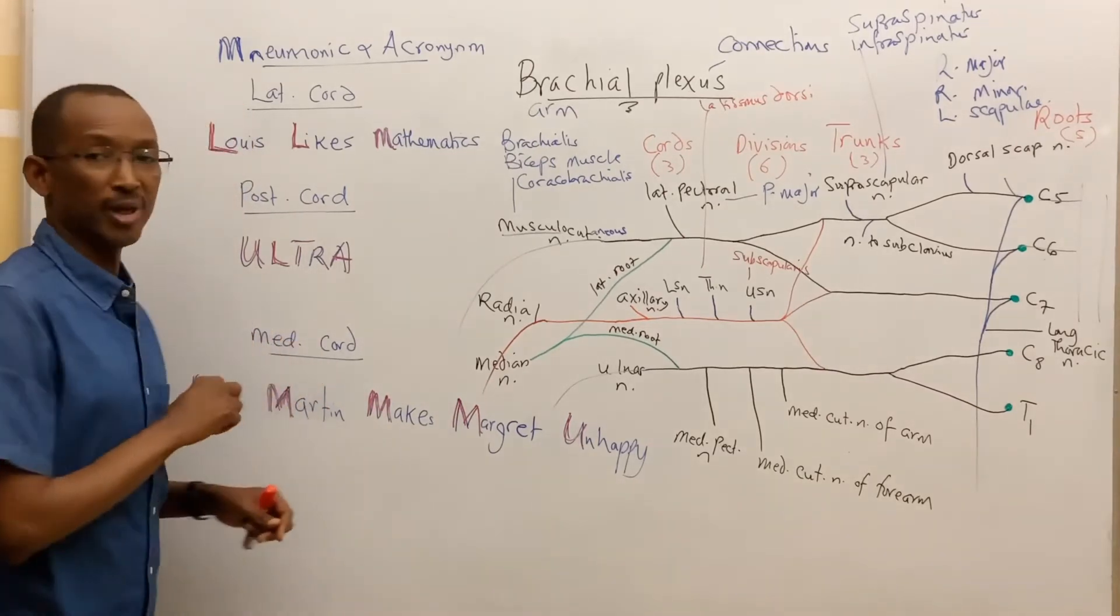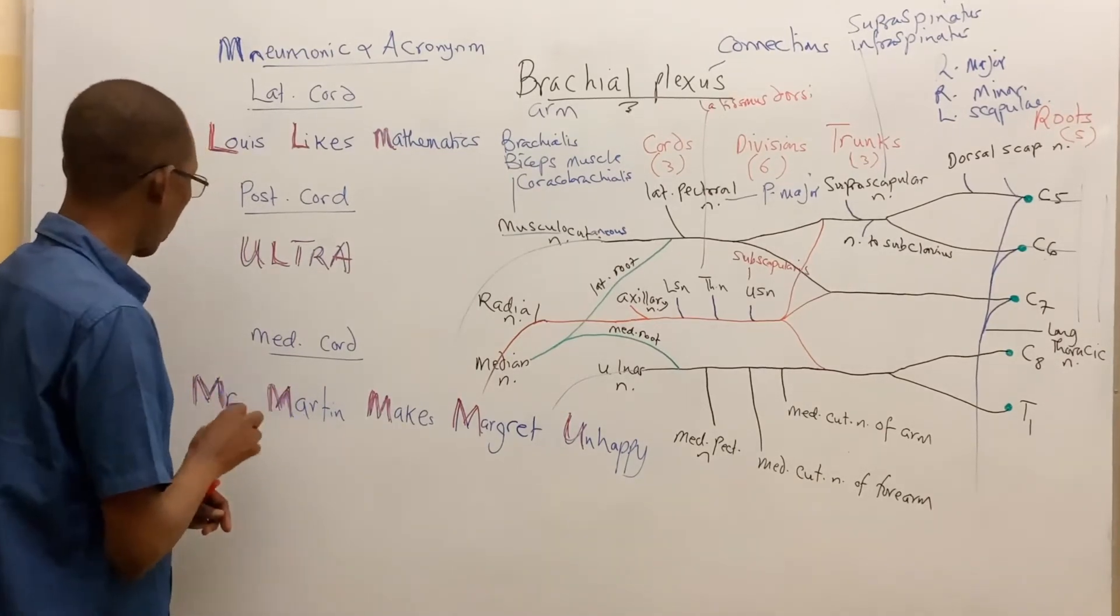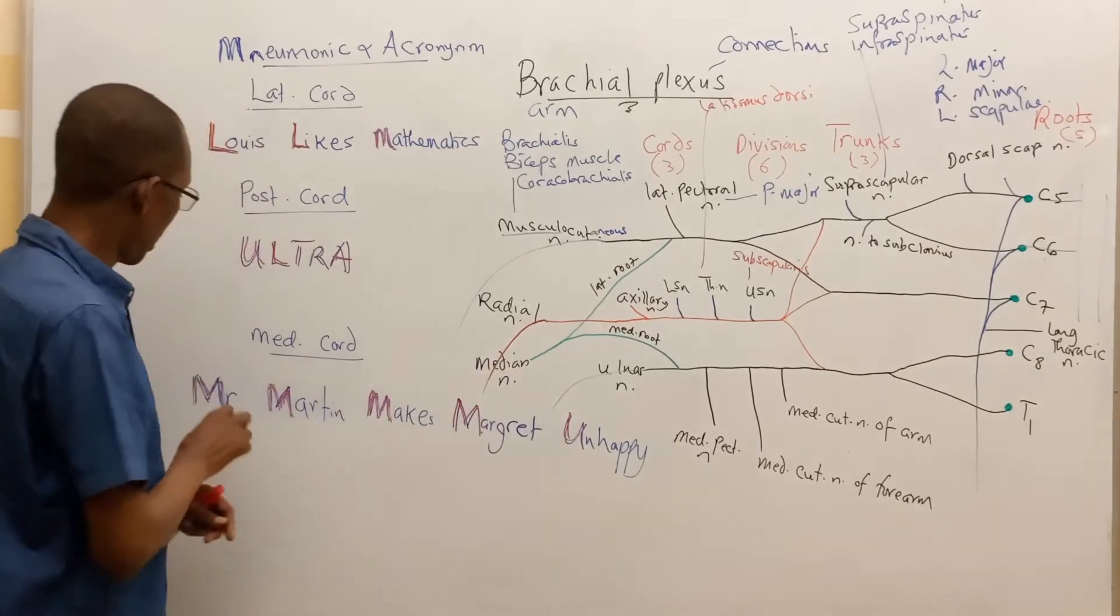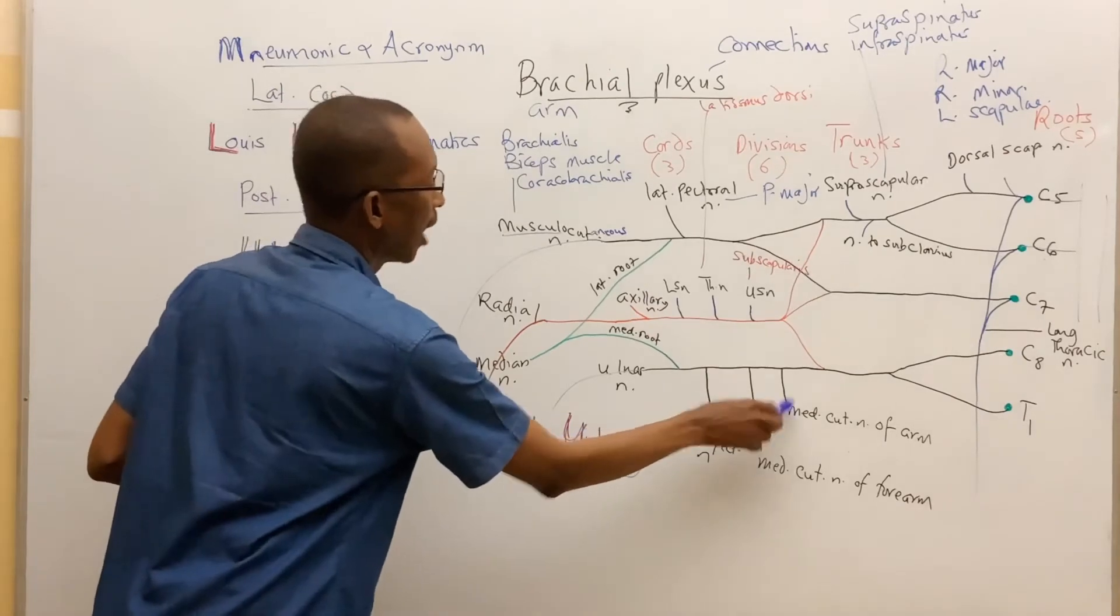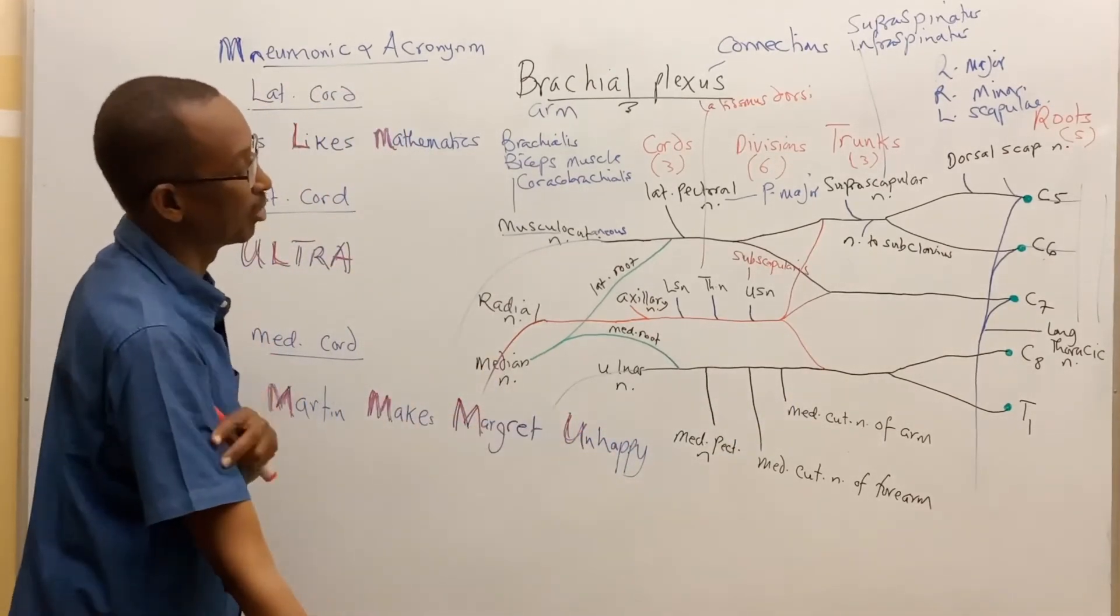From the medial cord of the brachial plexus, I have a mnemonic, what I said, which I call Mr. Martin makes Margaret unhappy. Mr. M for Mr. here, for the medial cutaneous nerve of the arm, which I already made mention in my last video, supplies the skin of the medial side of the arm.